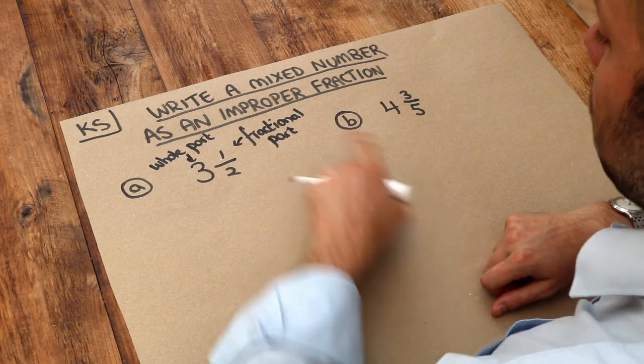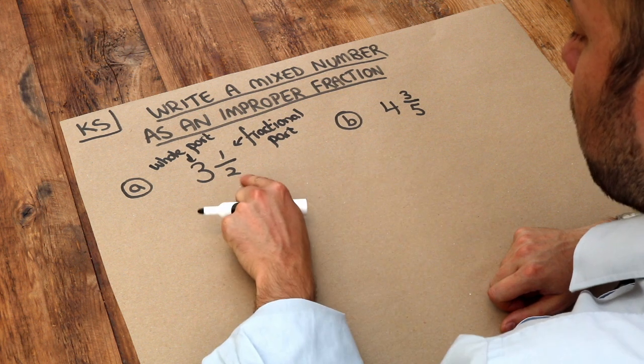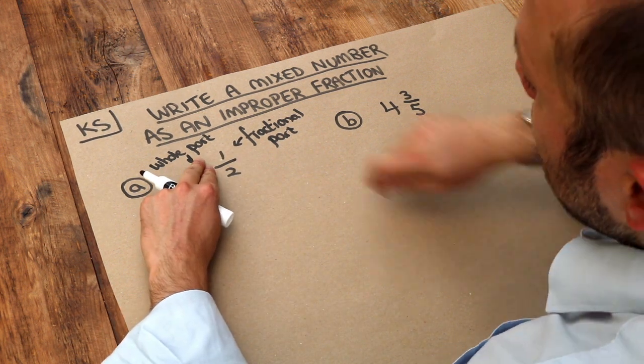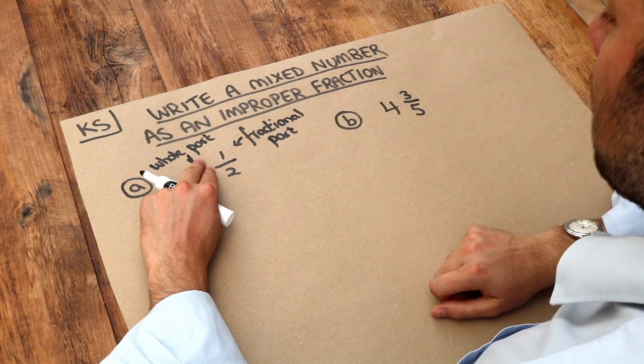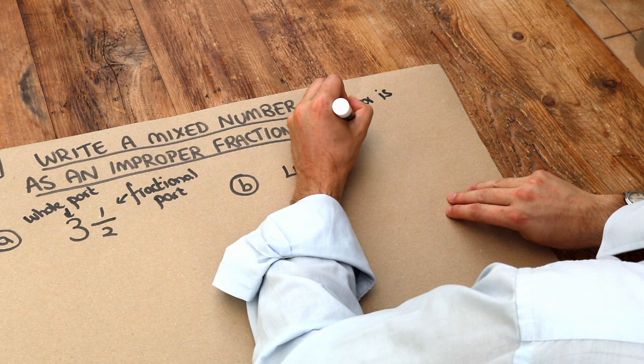But we want to convert it to an improper fraction. And what an improper fraction is, is just a single fraction without any number in front of it where the numerator is bigger than the denominator. The numerator is larger than the denominator.